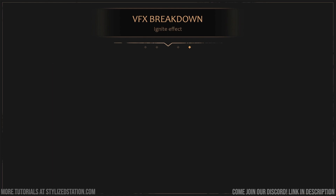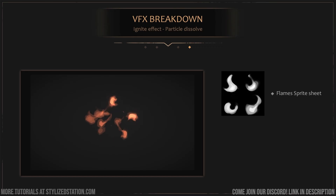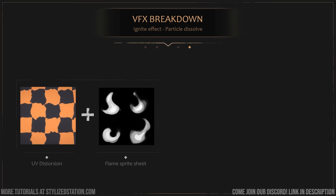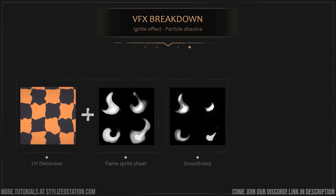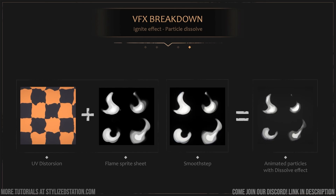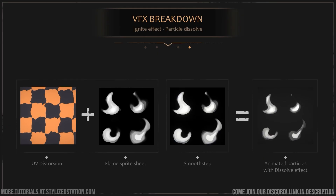To end this presentation, we'll talk about the ignite effect and especially the particle dissolve part. To achieve it, we'll need a sprite sheet and a noisy texture. For the particle dissolve, we use the UV distortion technique we saw earlier and add this to the flame sprite sheet. Combining this with a smooth step function, we'll have a very nice fading-out particle over its lifetime. It's quite easy to do and adds a lot of movement to your particles.